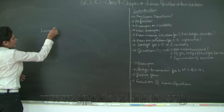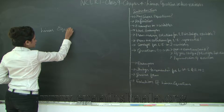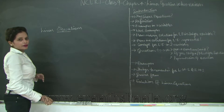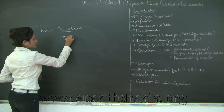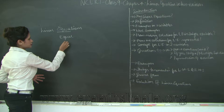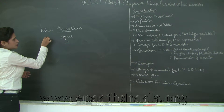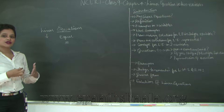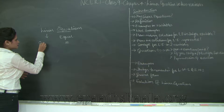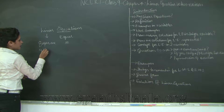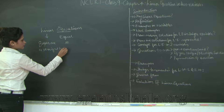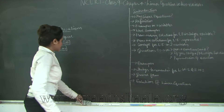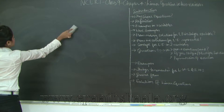We have 'linear' and 'equations.' The word 'equations' is derived from the term 'equal,' which means your equations will have an equal-to sign. And why 'linear'? Because the graphs of such equations — when you find the solutions — will give you a straight line on your graphs. Therefore, 'line' and 'equal to' gives you 'linear equations.' So let us write down the definition of linear equations.